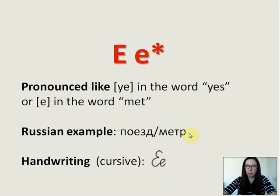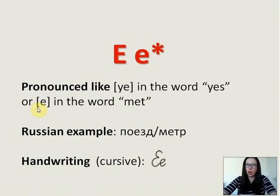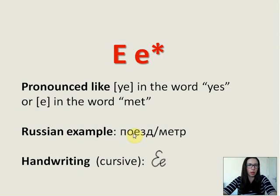Е — note that it is also a letter with a star symbol. It's pronounced like E in the word 'yes' or E in the word 'met.' But this letter can also make different sounds, which we will discuss later. Russian examples: 'поезд,' which means train, and 'метр,' which means meter. And you can see the cursive.